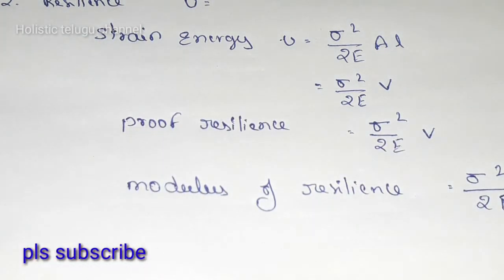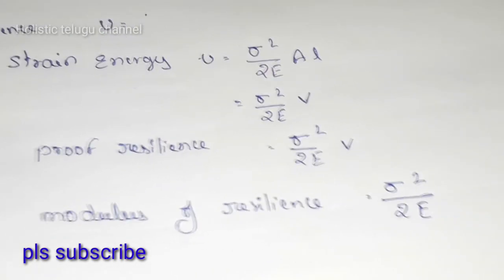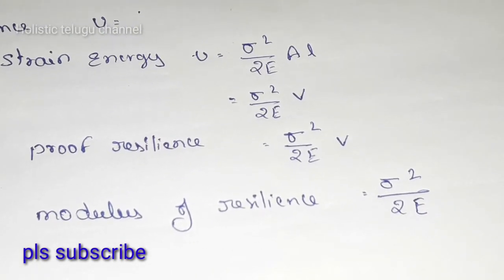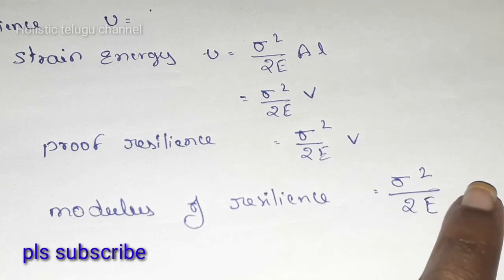The modulus of resilience is pi square by 2E. V is the volume.